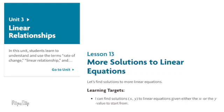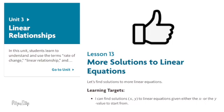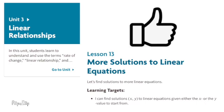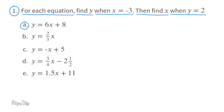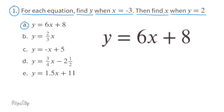8th grade unit 3 lesson 13: more solutions to linear equations. Before we get started, please take a moment to give this video a thumbs up. Problem number one: for each equation, find y when x is negative 3, then find x when y equals 2. Part a: y equals 6x plus 8. First we need to substitute the x with negative 3.